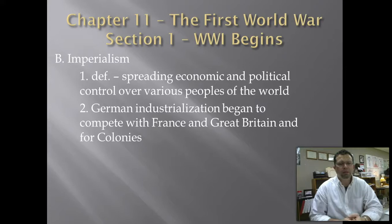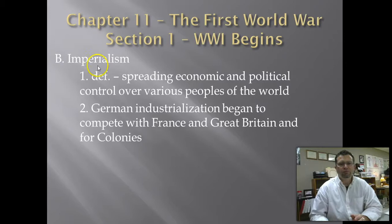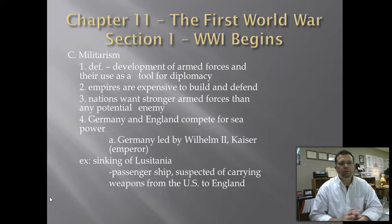Another cause of World War I is imperialism, and we've studied imperialism for a very long time. Another word to describe imperialism is colonialism. The definition of imperialism, as you know, is spreading your economic or political control over various peoples of the world. It's also known as colonialism because in this race countries attempt to establish colonies. Germany and their industrialized efforts began to challenge France and Great Britain, and the establishment of colonies around the world was also a huge competition. When the United States was involved in this imperialist race, we were not out to establish colonies — we were doing it for economic purposes.